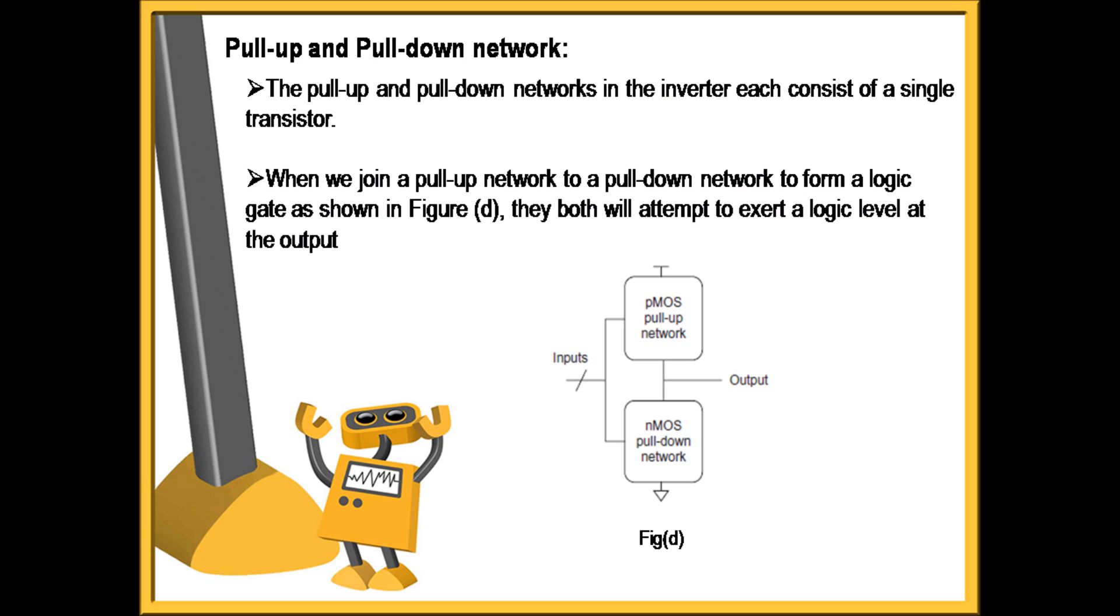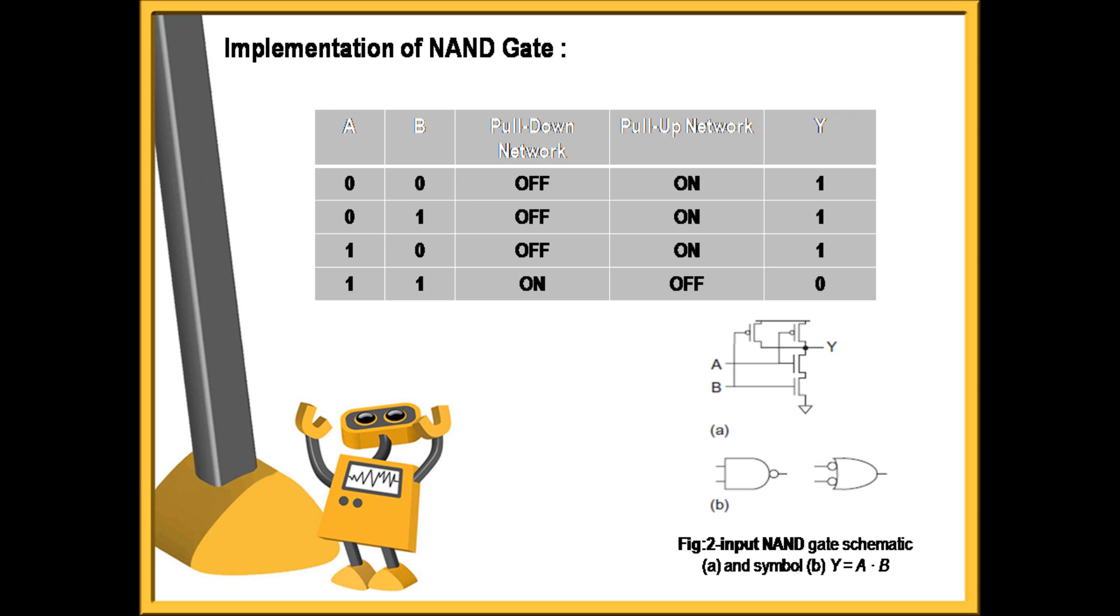A basic implementation of NAND gate can be performed by using these CMOS transistors. As you can see in the figure, to get output Y equals A NAND B, we require two parallelly connected PMOS transistors, which are then serially connected to two serially connected NMOS transistors, where the inputs A and B are given to the input of PMOS and NMOS transistors and output Y is taken. As seen in the truth table, if inputs A and B are 0, the pull-up network will be on and pull-down network will be off, so the output Y equals 1 is achieved.